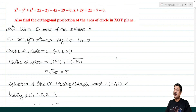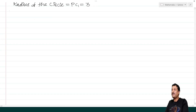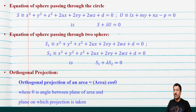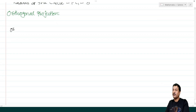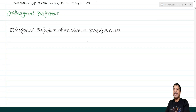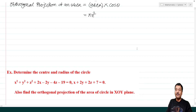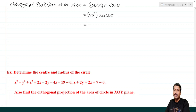The center of the circle is C₁ = (−7/3, −5/3, −2/3) and radius PC₁ = 3. For the orthogonal projection of the area onto the XOY plane: orthogonal projection = area × cos θ = πr² cos θ = π(3²) cos θ = 9π cos θ.